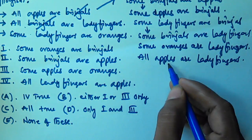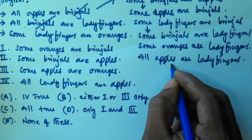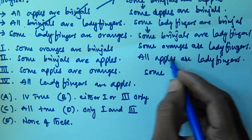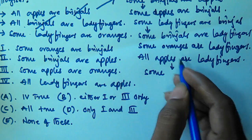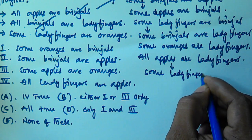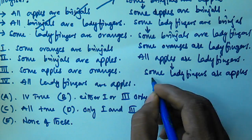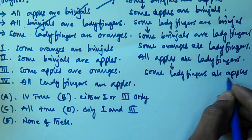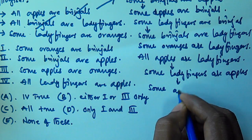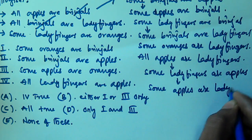From All apples are ladyfingers, we can interchange apples and ladyfingers, and all becomes some — so Some ladyfingers are apples. And again since some is there, we can interchange apples and ladyfingers, giving us Some apples are ladyfingers.